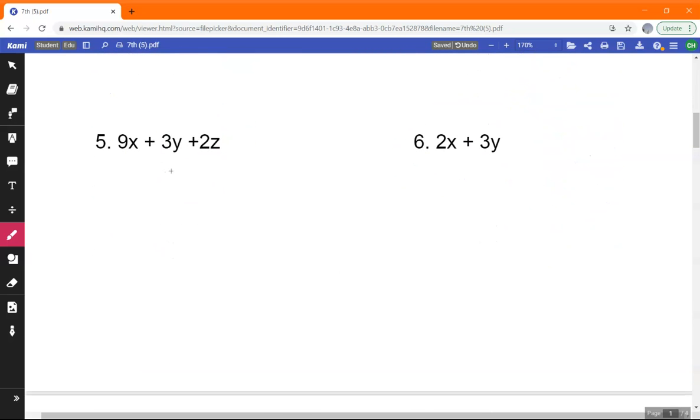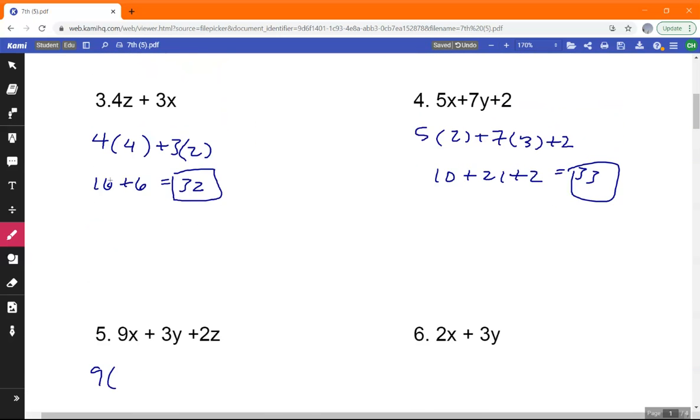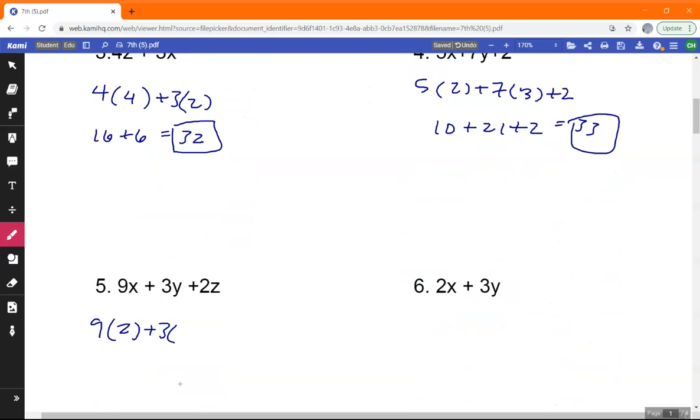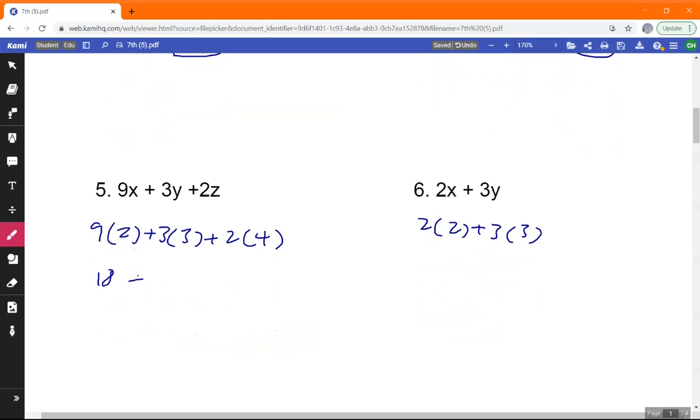Okay, let's do 5 and 6. 9 times 2 plus 3. Okay, I think I'm going to memorize these, 2, 3, 4. Plus 3 plus 2 is 4. Let's do this one right now. 2 times 2 plus 3 times 3. That's 18 plus 9 plus 8. That's 17 plus 18, right? So 17 plus 18, that would be 35. 4 plus 9, 13.